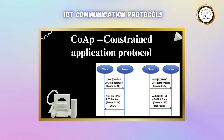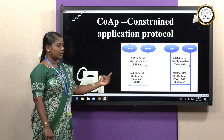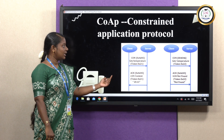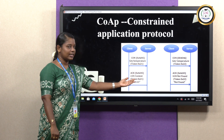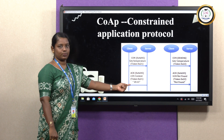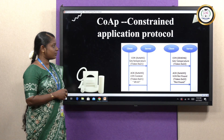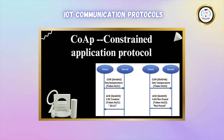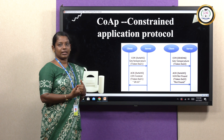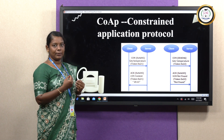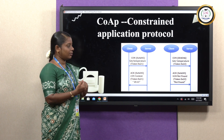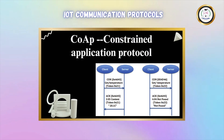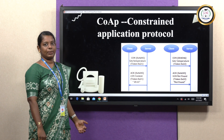Here we see an example of COAP in the form of successful and unsuccessful transmission. In successful transmission through a confirmable message, the client sends a request in the form of a token or ID to the server, such as requesting temperature data. Once the server receives the request, it sends the acknowledgement with the same token ID along with the response. In the unsuccessful condition, if the server does not receive the request from the client due to a signal or transmission problem, it will wait for a certain time period T. Then the client will send an acknowledgement that no response was received from the server, and it will get an error message.